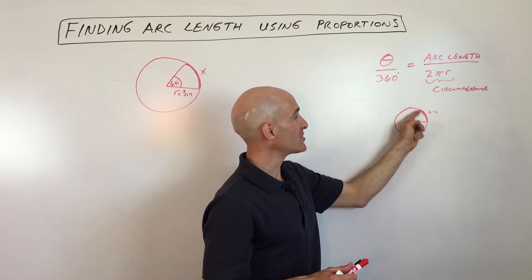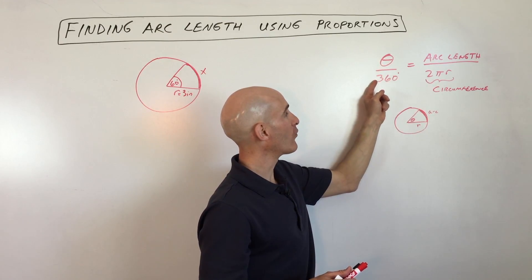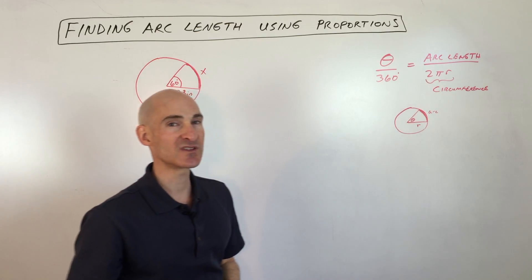which is the fraction of the entire circumference. So we're doing the part over the whole equals the part over the whole, and then we can go ahead and solve for what's missing.